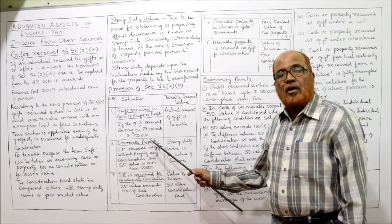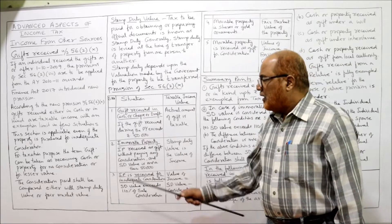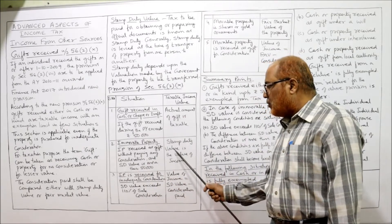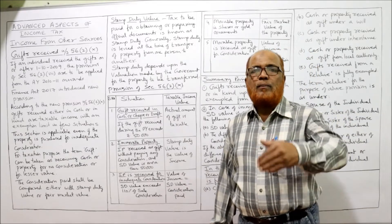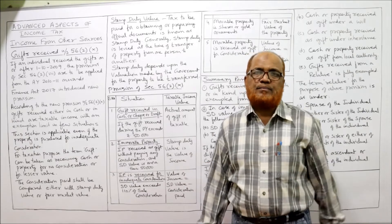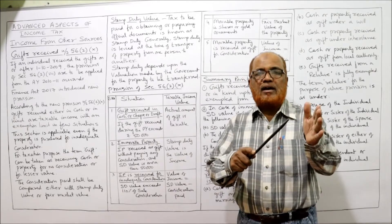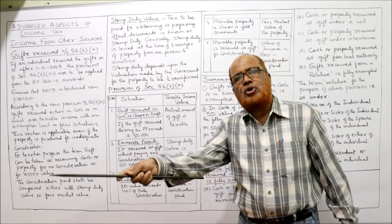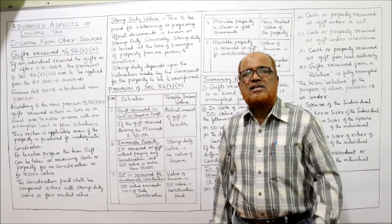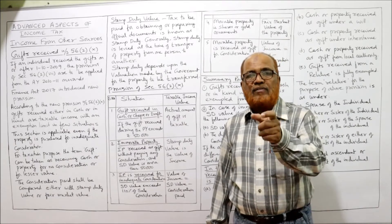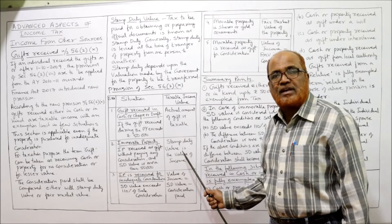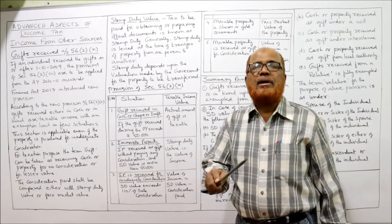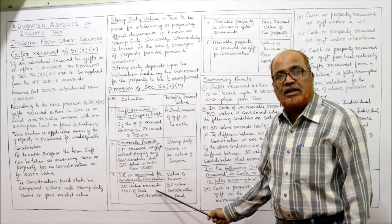Second, immovable property. Immovable property received as gift without paying any consideration — if the stamp duty value is more than Rs. 50,000, then stamp duty value is the value of the income. For example, Mr. A has gifted an immovable property worth Rs. 10 lakh without any consideration to Mr. B. Income tax asks: find out the stamp duty value. The stamp duty value is the income in the hands of the recipient Mr. B. If the stamp duty value of the property is Rs. 50 lakh, then complete Rs. 50 lakh is taxable in the hands of B when no consideration is passed.